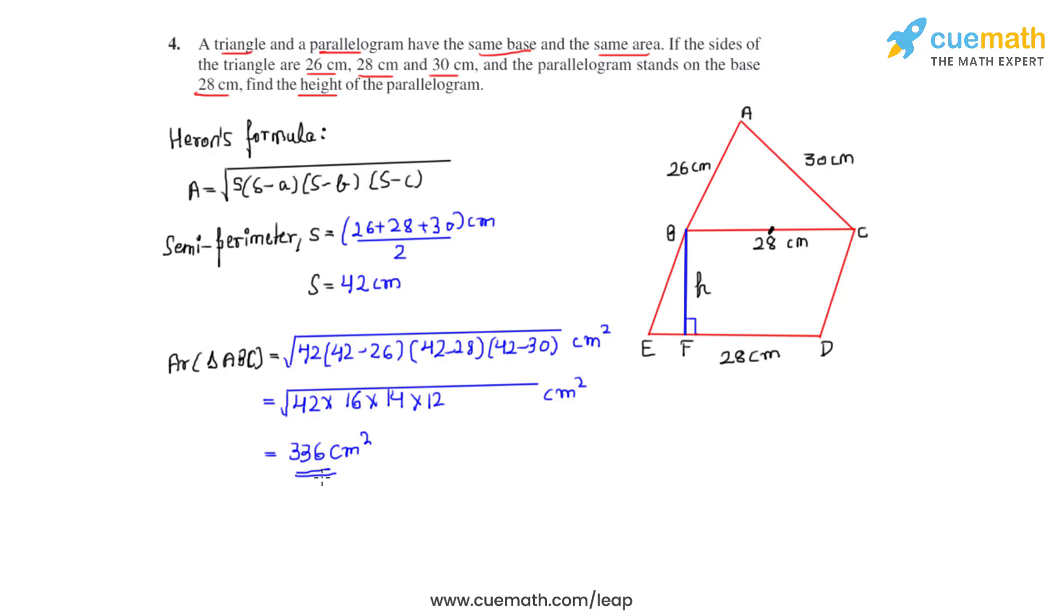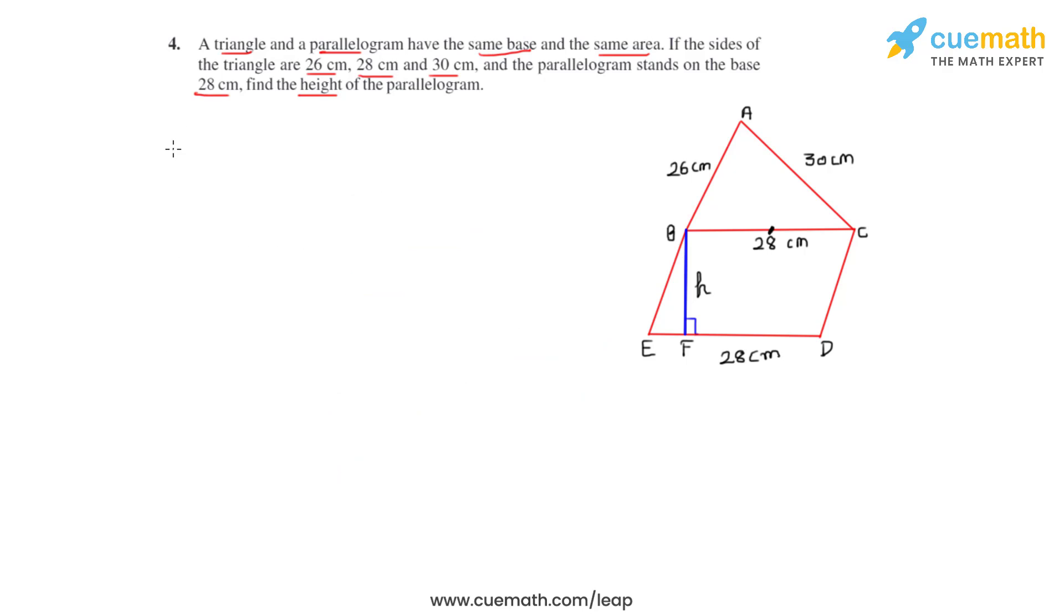Now that we have found out the area of triangle ABC, let's equate it to the area of parallelogram BEDC to find its height. So we write area of parallelogram BEDC to be equal to the area of triangle ABC. Now we know that the formula to find the area of a parallelogram is base into height. So we equate B times H to the area of triangle ABC which is 336.